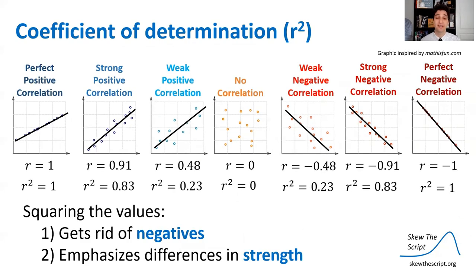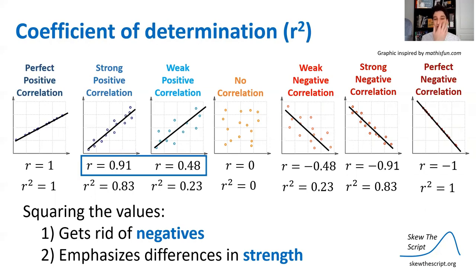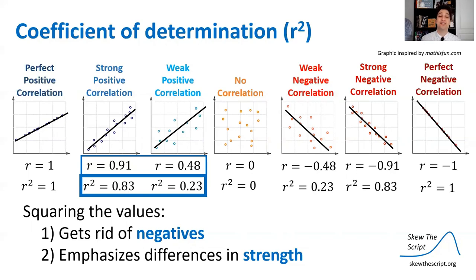You'll notice that negatives turn into positives when squared. What's useful about R-squared is that it gets rid of the negatives, so we're just focusing on strength, not direction. It also really emphasizes differences in strength. For values with a higher strength versus lower strength, there was a moderate difference in their R-value, but when we square R, it really accentuates that difference — R-squared is more sensitive to differences in strength.